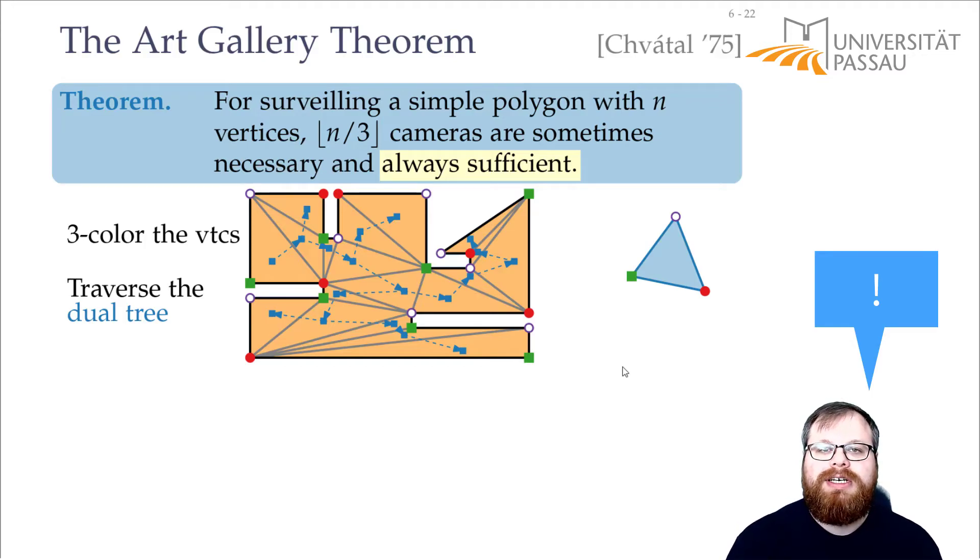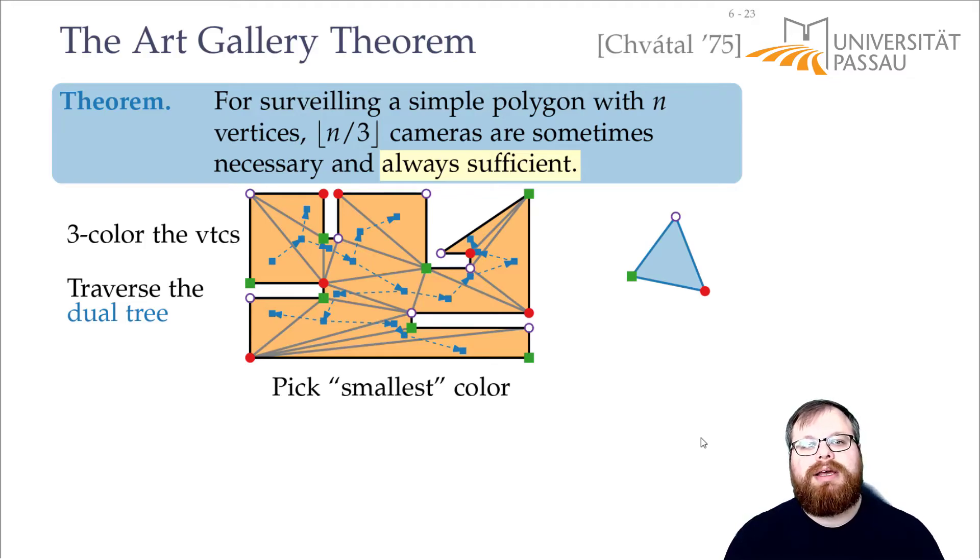That means all these three color classes, if we pick all red or all green or all purple vertices, this always gives us an art gallery surveillance. And how can we now estimate the size of these surveillances that we get? Well, we just pick the smallest color class. So we pick the color that has the smallest number of vertices. And since there are n vertices in total, the average number of vertices per color is n over three.